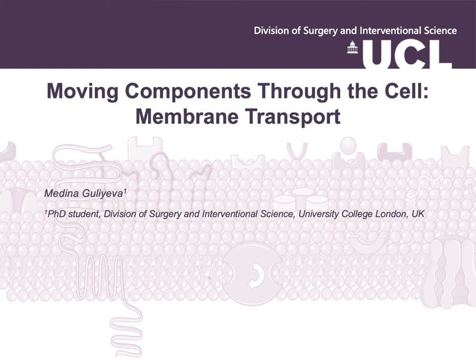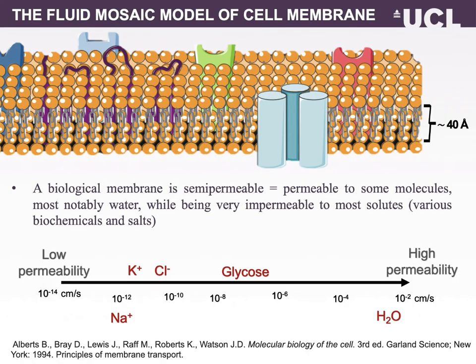We are going to look at the membrane transport systems. Life depends on a membrane's ability to precisely control the level of solutes in the aqueous component inside and outside the membrane. This membrane determines what solutes enter and leave a cell. A biological membrane is semipermeable, meaning it is permeable to some molecules, most notably water, while being very impermeable to some solutes such as biochemicals and salts.